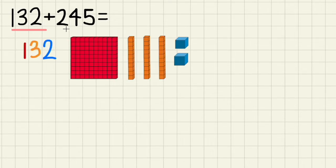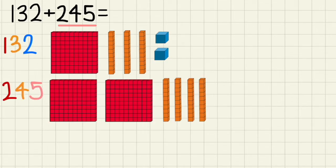So now let's learn how to do some three-digit addition. Here we have 132 plus 245. Our first step is to break down what 132 consists of. So it consists of 1 hundred, 3 tens, and 2 ones. And now let's focus on 245. So 245 consists of 2 hundreds, 4 tens, and 5 ones.